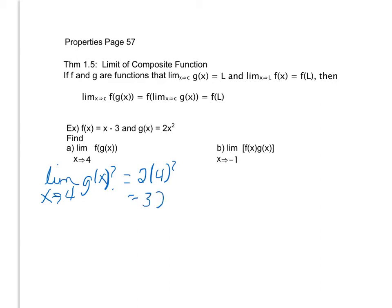So notice that the overall limit now is going to be f(32), my outside function plugging in the limit I found from my inside function. Well, f(32) is going to be 32 minus 3, which is 29. So my overall limit is 29. Be careful that you know the difference between a composite function and two functions that have an operation happening between them.